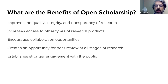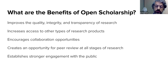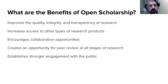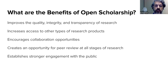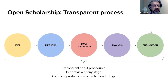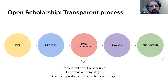By releasing your research earlier, you can get feedback from your community. It also establishes stronger engagement with the public — if you're releasing research openly and thinking about those impacted by your work, you're engaging in a dialogue more freely. Open scholarship is essentially a transparent process: communicating all steps you take, getting peer review, and providing access at every stage.